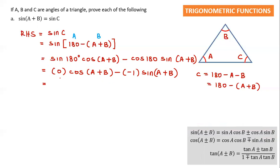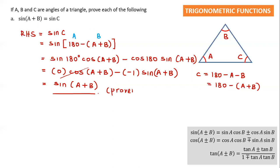Whatever multiplies with 0 equals 0, so that term is gone. We have negative times negative which gives positive 1, so we end up with sine(A+B). It's proven. Hope you understand — now let's go to Question B.